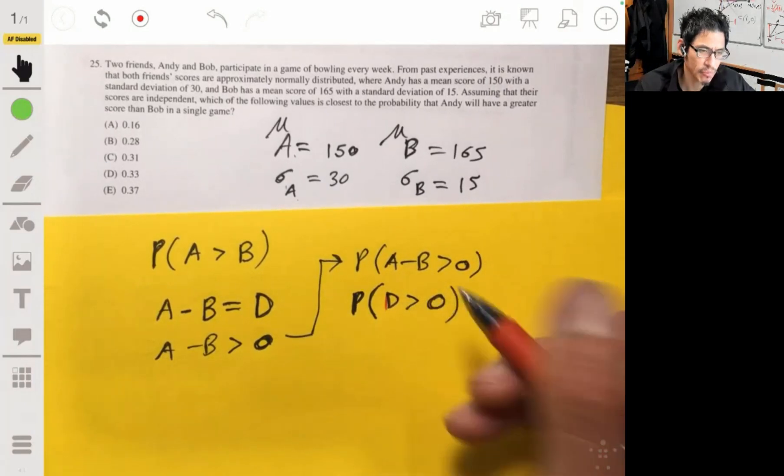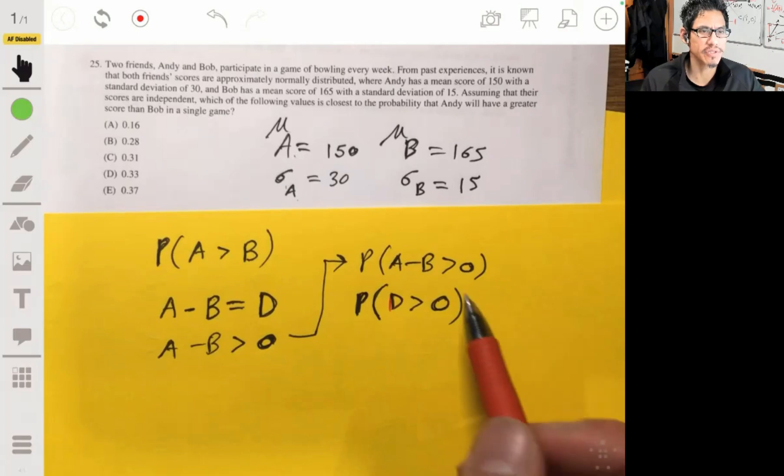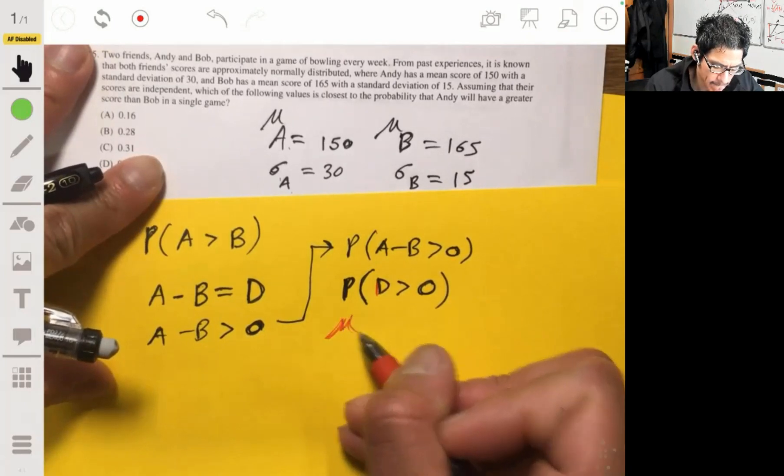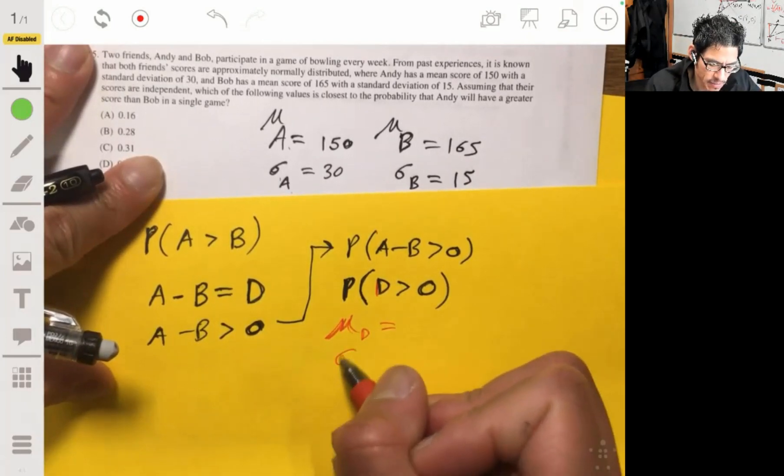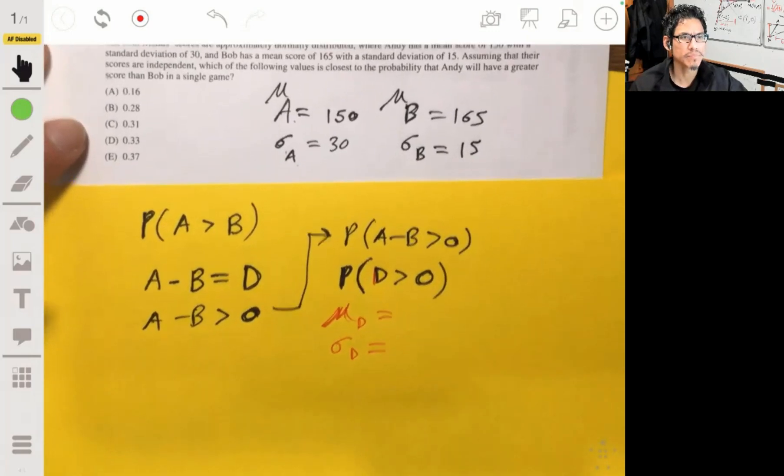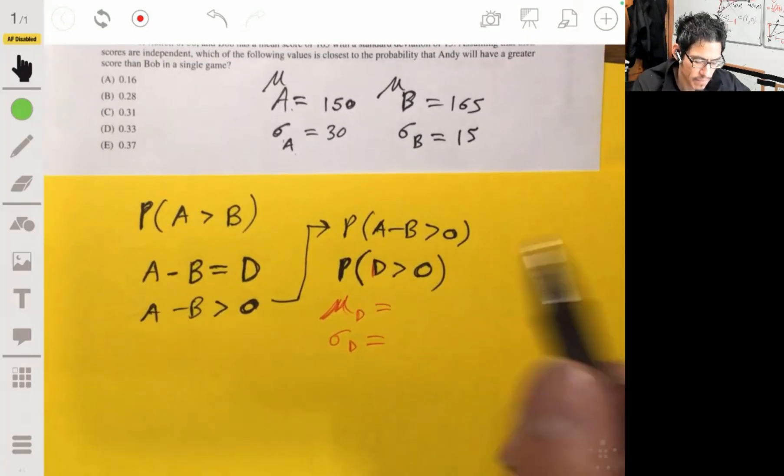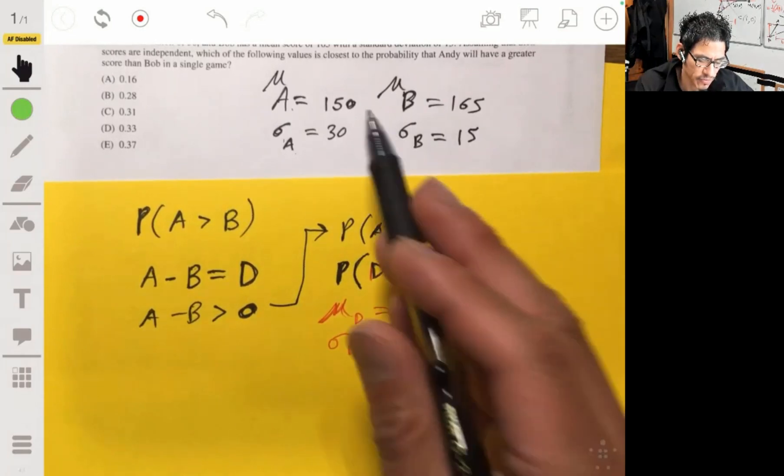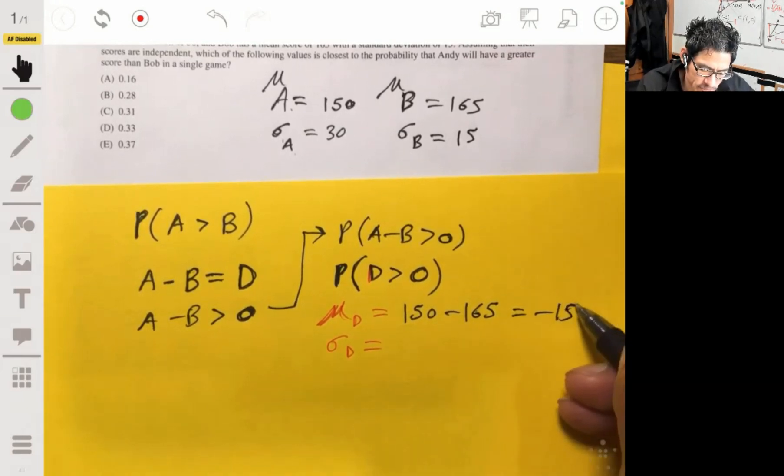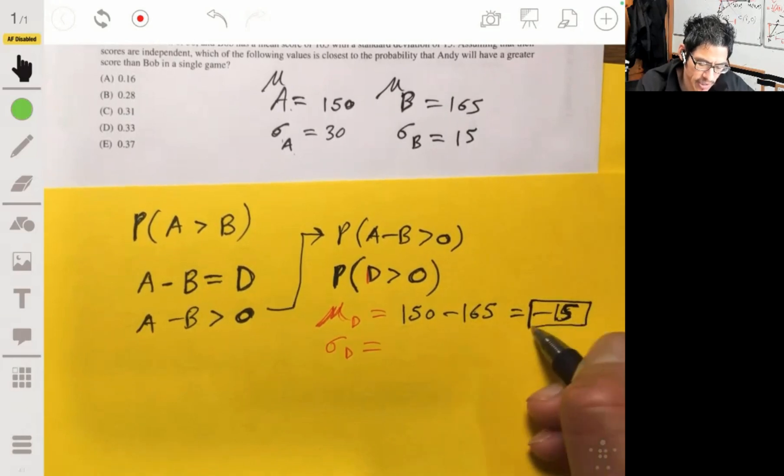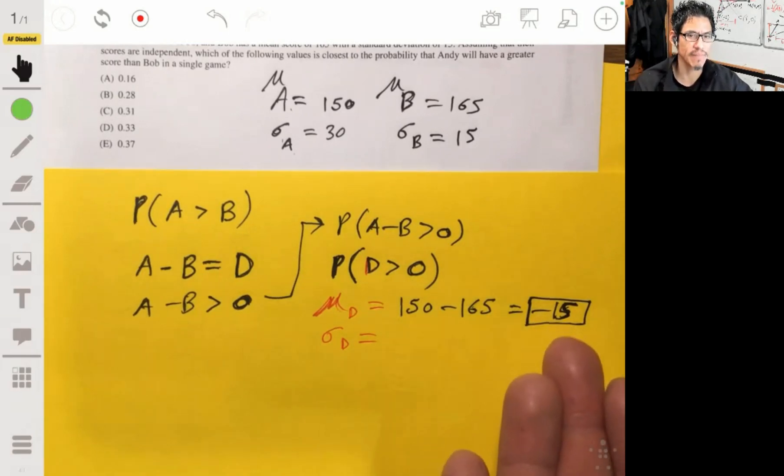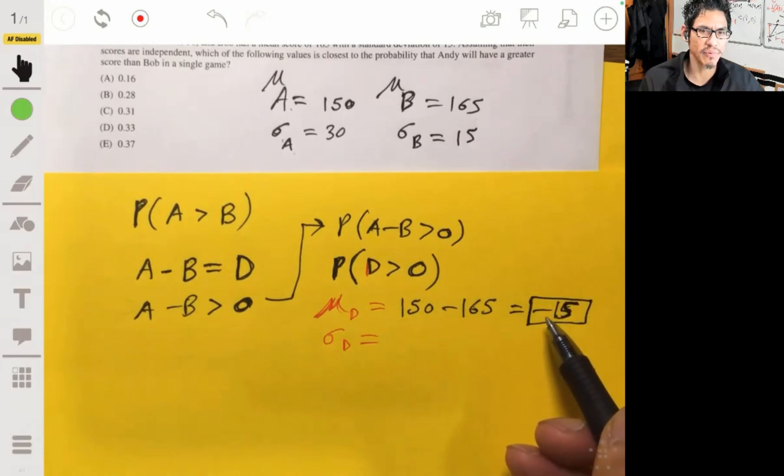And let's call this D, D is equal to Andy's score minus Bob's score. And since we want to find when the probability that Andy's score is greater than Bob, that means that A minus B is going to be positive or greater than zero. And so, in other words, we want to find the probability that A minus B is greater than zero, or the probability that D is greater than zero, because these are the same thing. Now, we have to figure out what the distribution is of D, of the difference. So we want to find the mean of D, and we need to find the standard deviation of D. Okay, so now the mean of D is just going to be the mean of A minus the mean of B, or just 150 minus 165, which is negative 15. Which makes sense because Andy has a lower score than Bob on average. So it makes sense that the mean is going to be negative, because that's basically saying that on average, Andy is going to score 15 points lower than Bob.